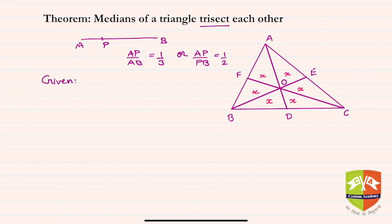AD, BE, and CF are medians of triangle ABC.